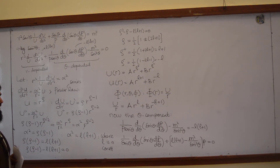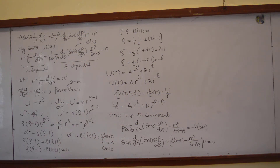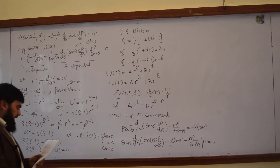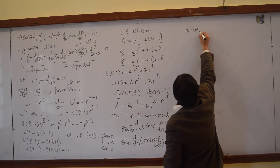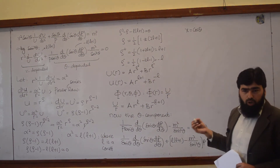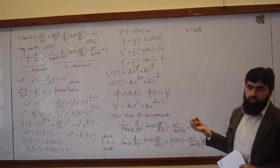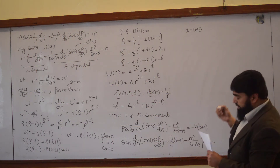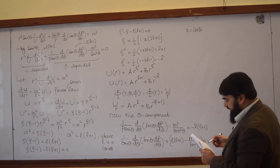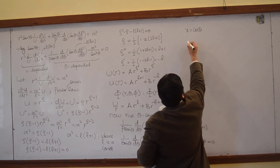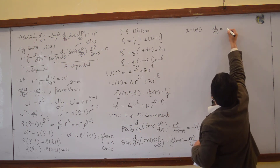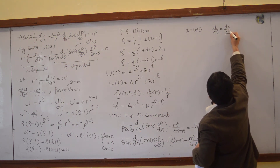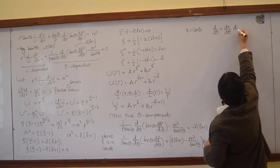Now we apply another mathematical tactic to reduce this equation to a simpler form. Let x equal cos theta. You know x equals r cos theta; if I take r equal to 1, I can define x equal to cos theta. Then d by d theta can be written using the chain rule as dx over d theta times d over dx, and dx over d theta equals minus sin theta, so d by d theta equals minus sin theta d by dx.